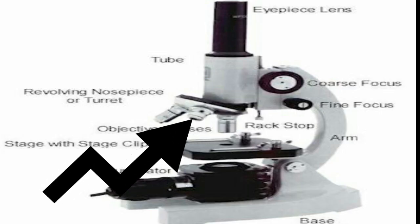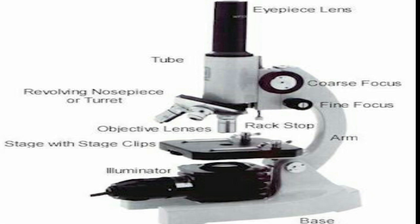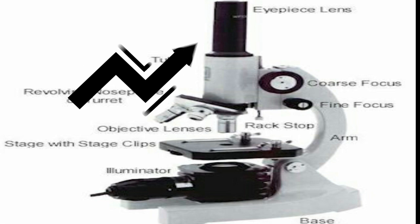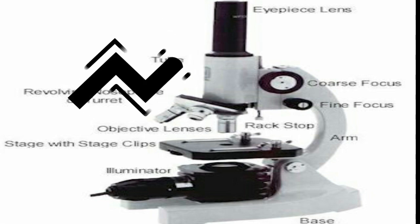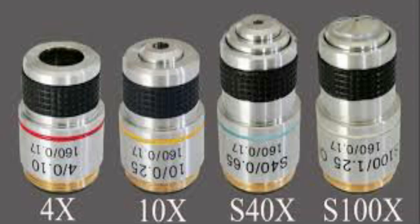A low power objective is used first to locate the region of the specimen to be examined. If further magnification is wanted, a high power objective is then moved into position. The microscope usually has just one eyepiece or ocular; however, in some cases the ocular may be removed and replaced by another of different power.